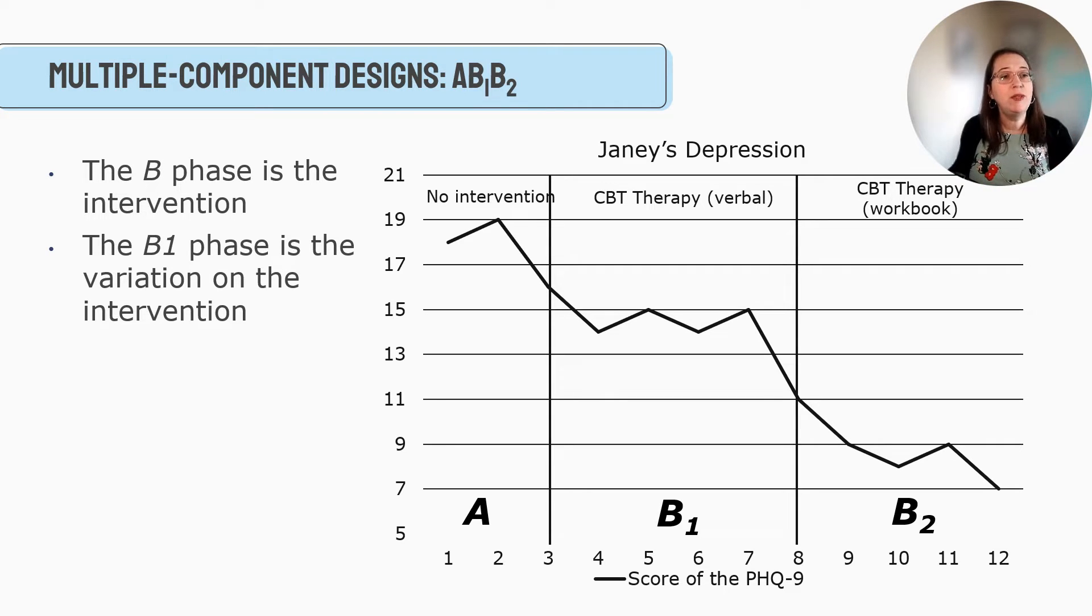Then we say, okay, we want to see if an intervention is making a change. Let's start the intervention. So let's say we start with a more mild or less intense version. We do cognitive behavioral therapy, and it's just the verbal. We're just talking through things. There's no homework. There's no workbooks. We're just starting with some thoughts, feelings, cognitive distortions, all of that kind of stuff. So then we say, okay, that was a mild intensity. We had her in there for five weeks. You can see her PHQ-9 score dropped some, so that's a good sign.